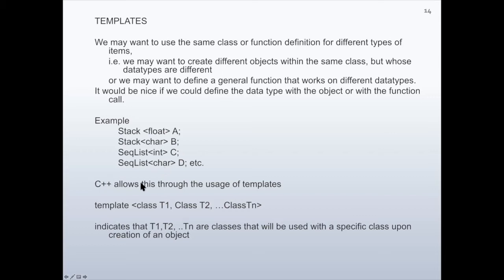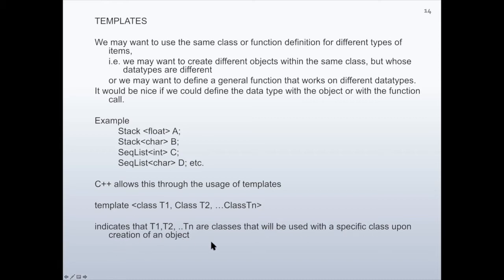C++ allows this through the use of templates. For the template definition, we first write the reserved word 'template', then we inform what the template types are. For example: class T1, class T2, class Tn, etc. This declaration indicates that T1, T2 up to Tn are classes that will be used with a specific class upon creation of an object.